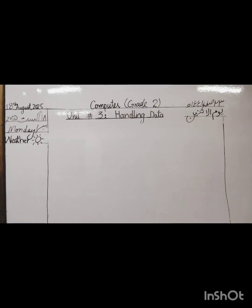Ishaal, can you tell me what is the date today? 18th — and which is the month? August. And year 2025. Today is 18th of August 2025, and in Urdu we can say 18 August 2025.